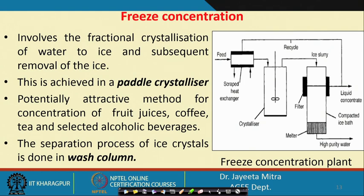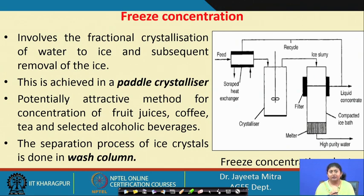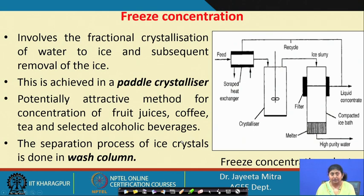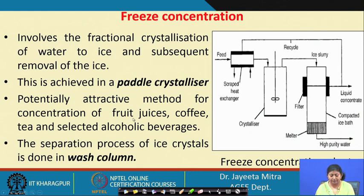Freeze concentration is a potentially attractive method for concentration of fruit juices, coffee, tea, and selected alcoholic beverages, with ice crystal separation done in a wash column. For fruit juice, this method removes moisture to make concentrated juice. However, if dissolved nutrients are lost with the water, the method is not suitable — for example, milk concentration would be problematic because some milk solids would be lost. But for fruit juices, coffee, and tea, it works well. Since it is freeze concentration done without heating, heat-sensitive compounds such as polyphenols in tea and antioxidants in fruit juices are properly preserved.